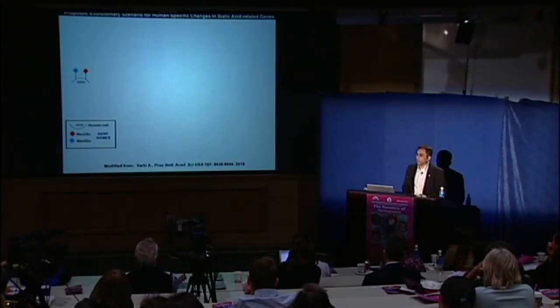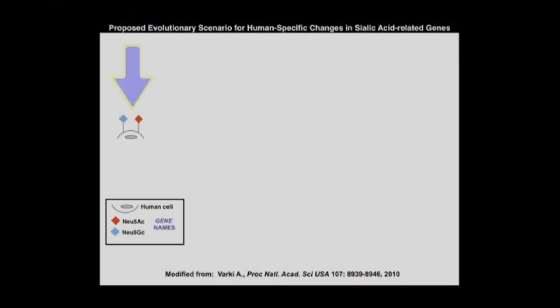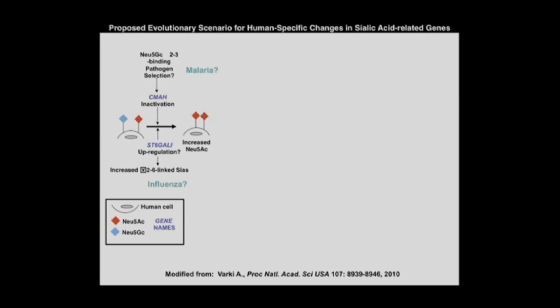We've been trying to put together an evolutionary synthesis of all these different findings, though reconstructing evolution is very difficult — practically impossible. All you can do is make a reasonable hypothesis. If you imagine a common ancestor with the chimpanzee in which there was both AC and GC, we underwent some selection — we think it was a form of malaria — and ended up with an excess of AC and no GC. Perhaps also in relation to influenza, we're not really sure. We also changed another gene called ST6-Gal1. The bottom line is we have very different pathogen regimes related to these situations.